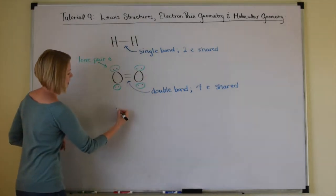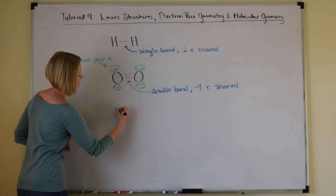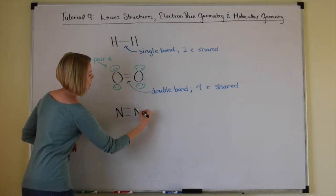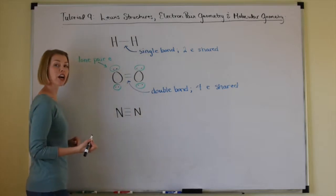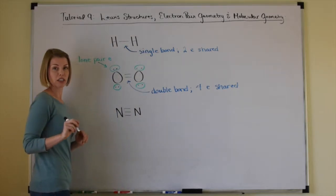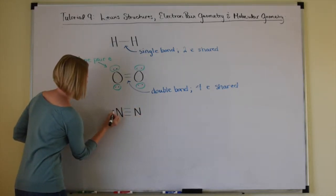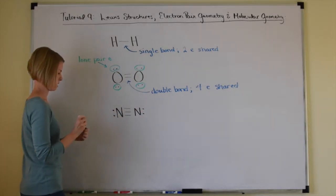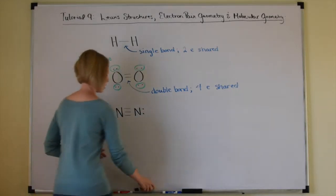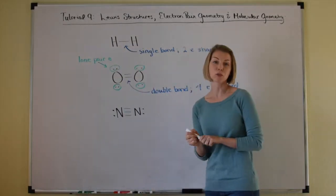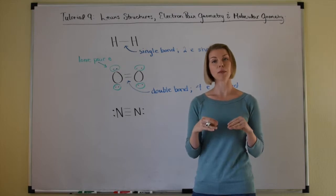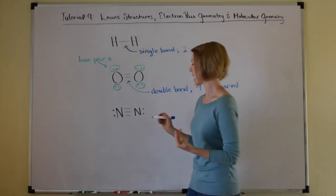Last but not least, two atoms can share six electrons in a covalent bond called a triple bond. That's what happens when two nitrogen atoms combine to form a diatomic molecule of nitrogen.